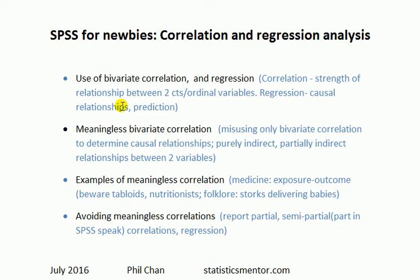The approach you take when building a model for causal relationships versus prediction is slightly different. For causal relationships, you'll know you're building such a model because you'll be trying to interpret the coefficients — your professor might say 'build a model and interpret the betas.' For prediction, you're building a model where given that your x variables take certain values, what is the value for your dependent variable? Prediction tends to be used more by businesses; at universities they'll teach the causal relationships approach.